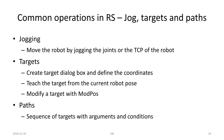Targets are created using a teach function or a dialog box which defines the coordinates — usually X, Y, Z and an orientation around the X, Y, Z axes. We can do some modification of the target using a modify instruction in relation to velocity and so forth. Paths are populated with targets, so without a path we cannot move the robot — we need that to actually move around the robot TCP.